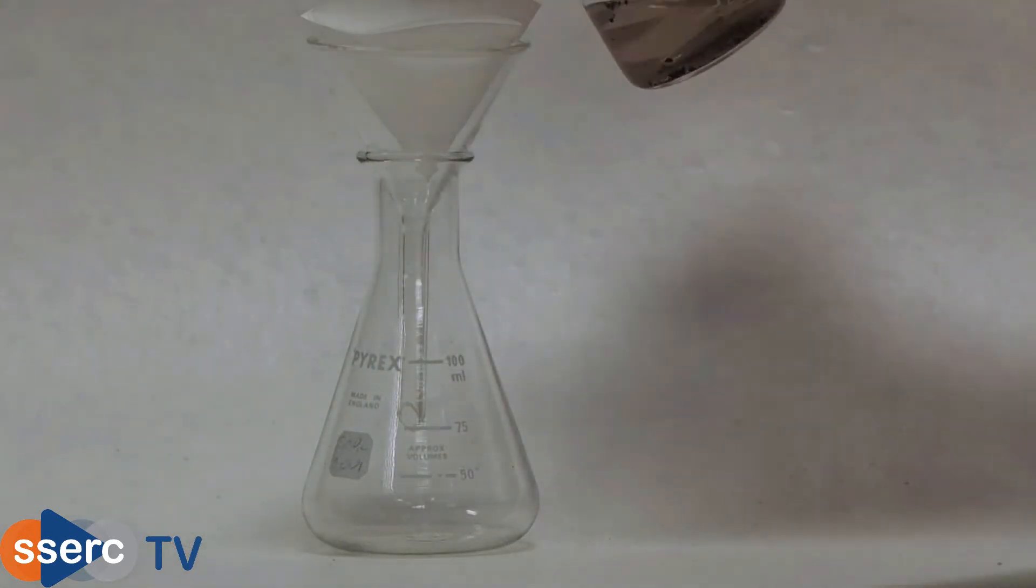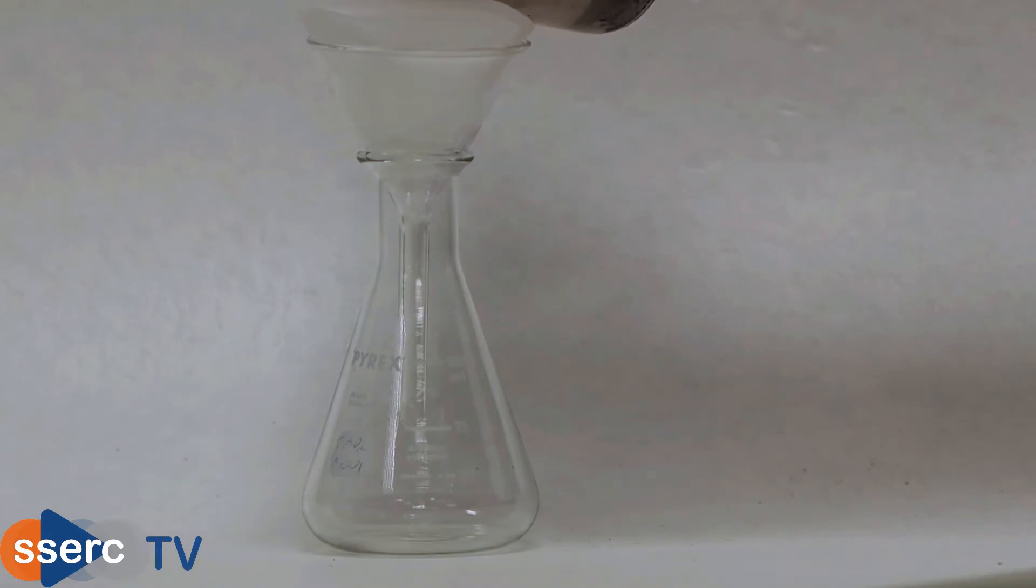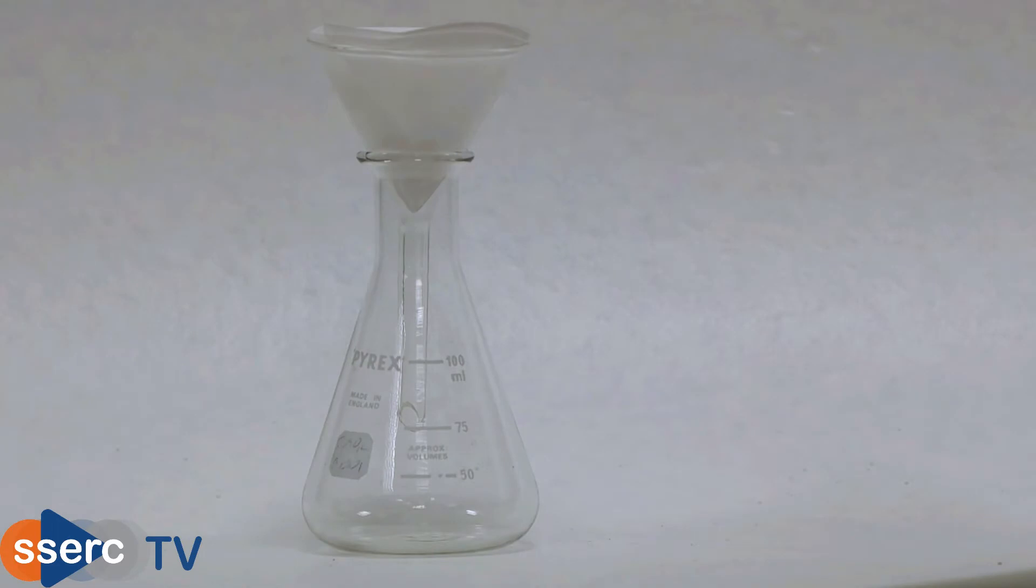Once you've done that, filter the nitric acid into a clean flask to remove the insoluble residues. The iron is now in the form of iron three nitrate solution.